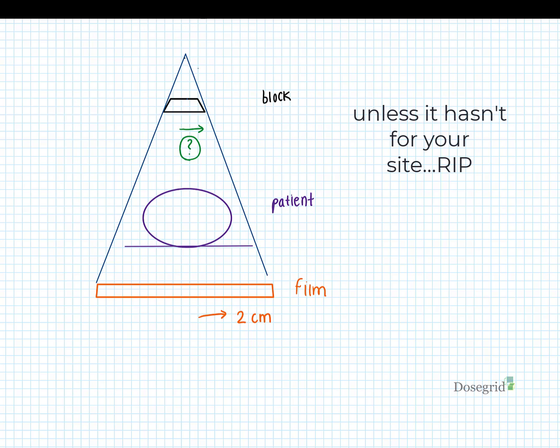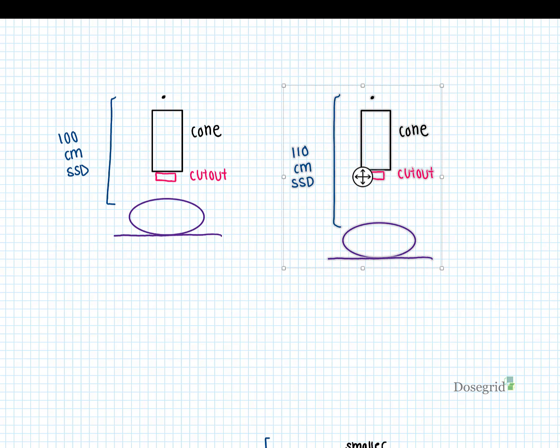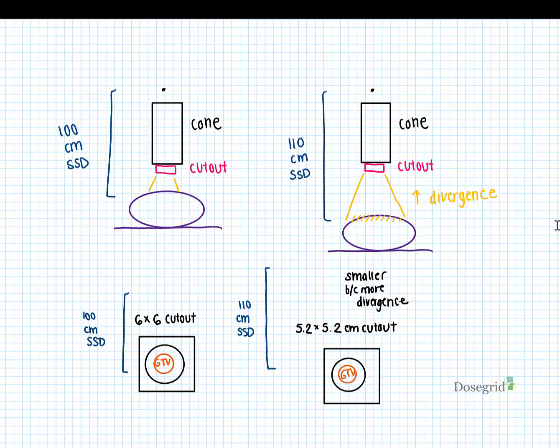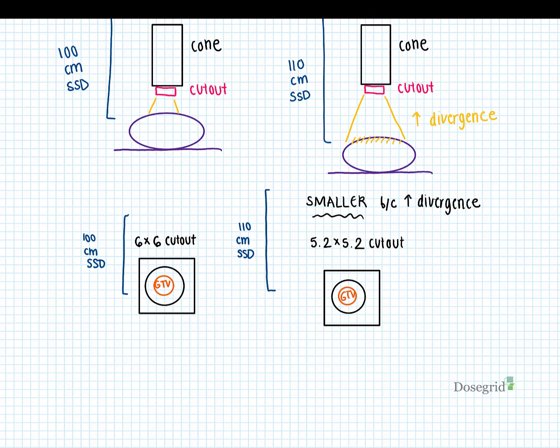In clinic today, magnification can apply to electron setups. For example, you want to treat a tumor to a certain field size at 100 cm SSD, but for clearance you need to change the setup to an extended 110 SSD. How do you adjust the cutout to yield the same field size? All magnification problems can be approached the same way regardless of clinical purpose.